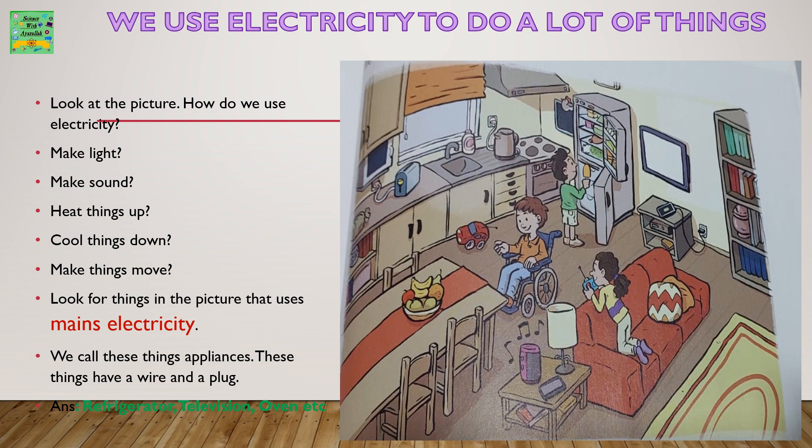Look for things in the picture that use mains electricity. We call these things appliances. These things have a wire and a plug. Answers include the refrigerator, television, oven, etc.